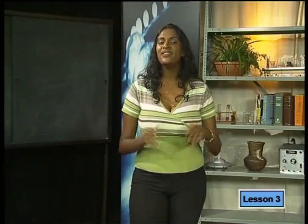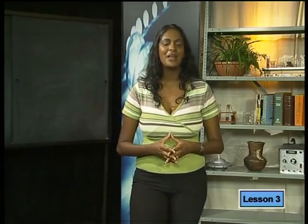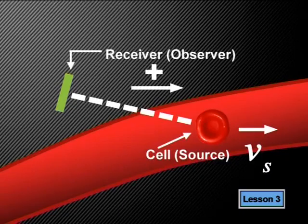Would you like to have a go at applying your scientific knowledge to medicine? How do you think the frequency of the received wave will differ from the frequency of the wave that is reflected from the blood cell if the blood is flowing away from the receiver? Well, we first need to work out our frame of reference. This diagram shows us the observer — in this case the receiver — and the source, the moving blood cells.